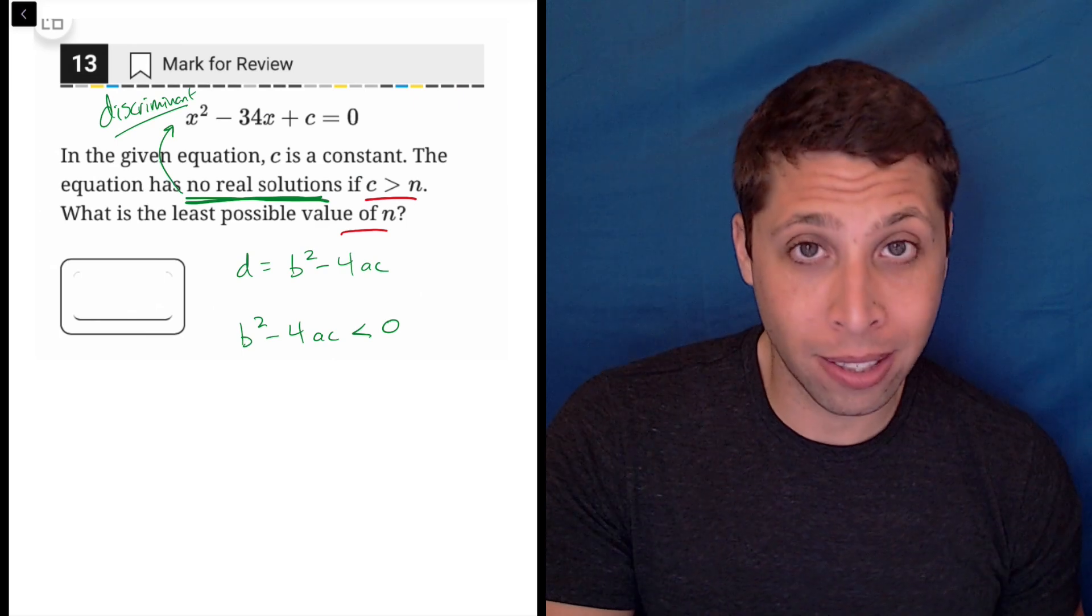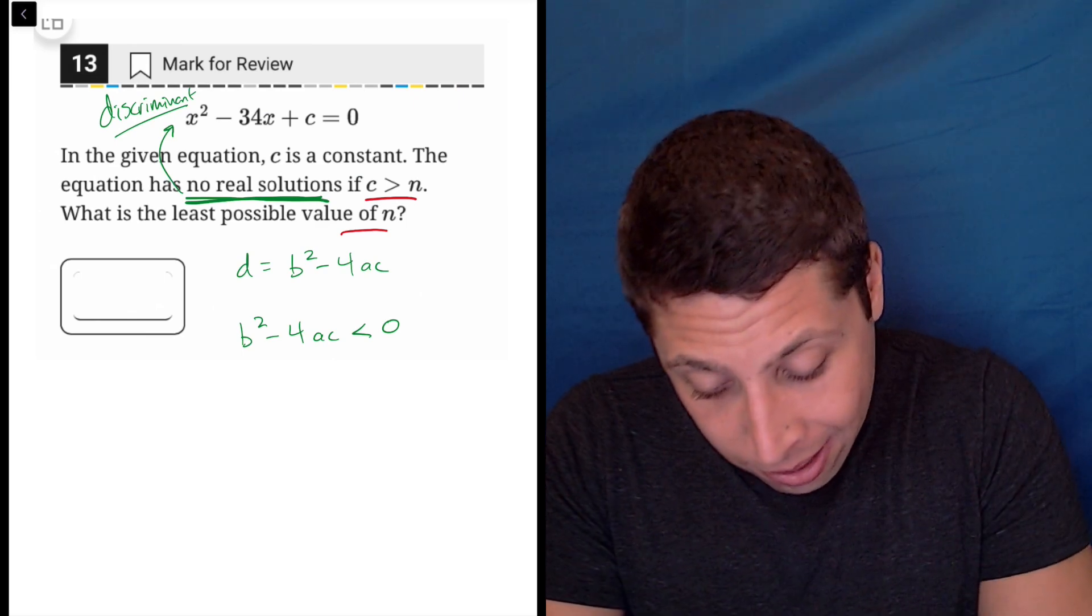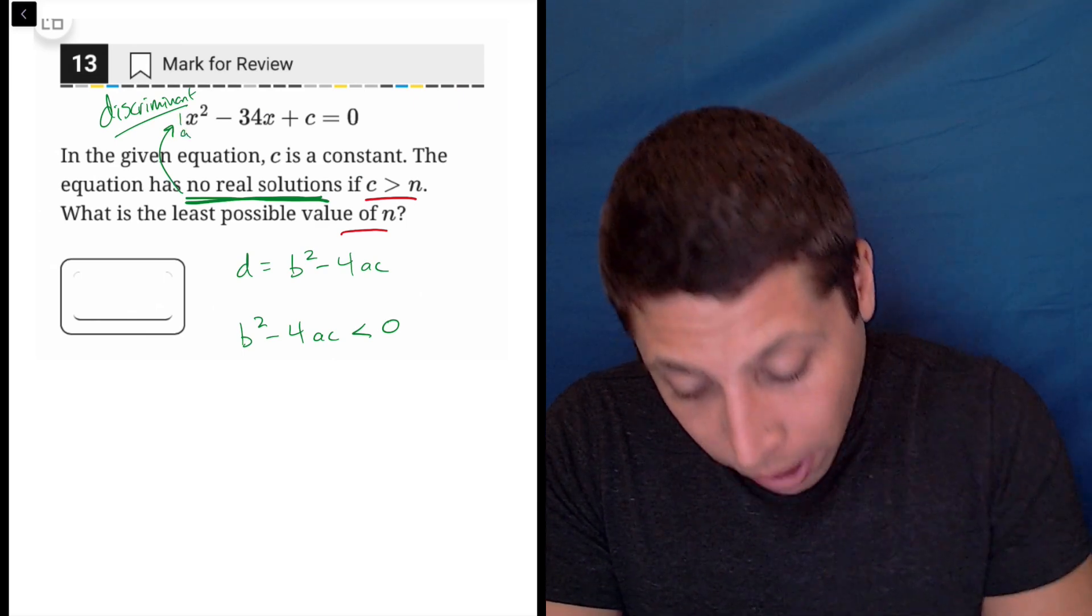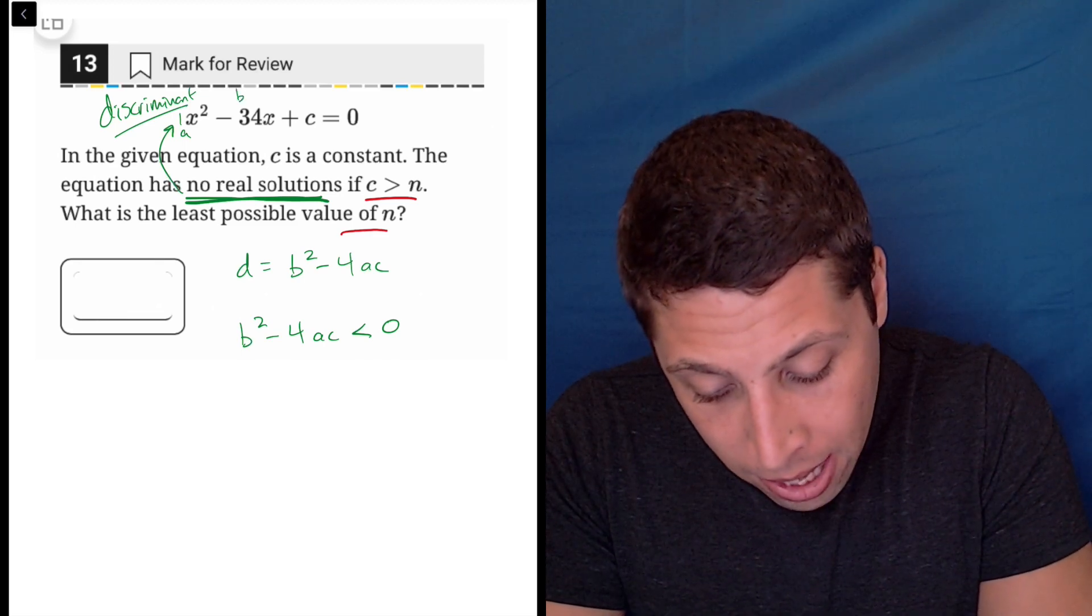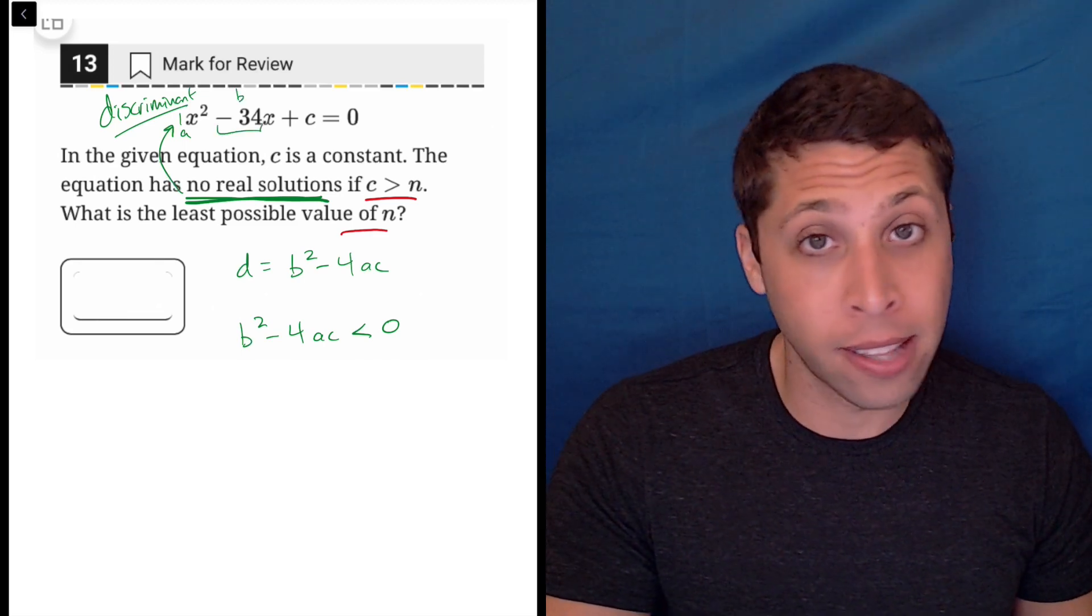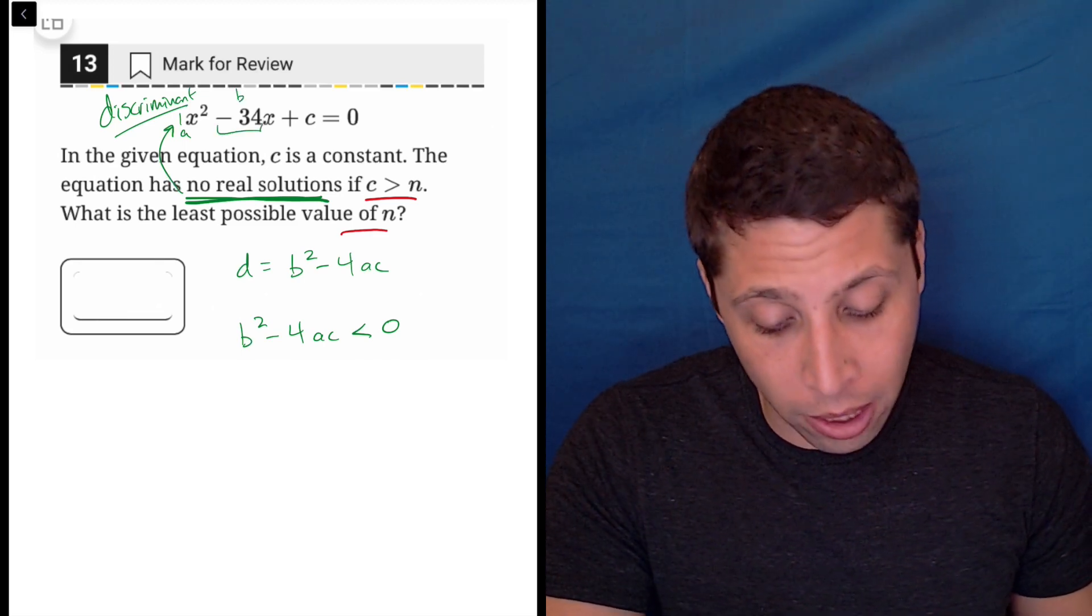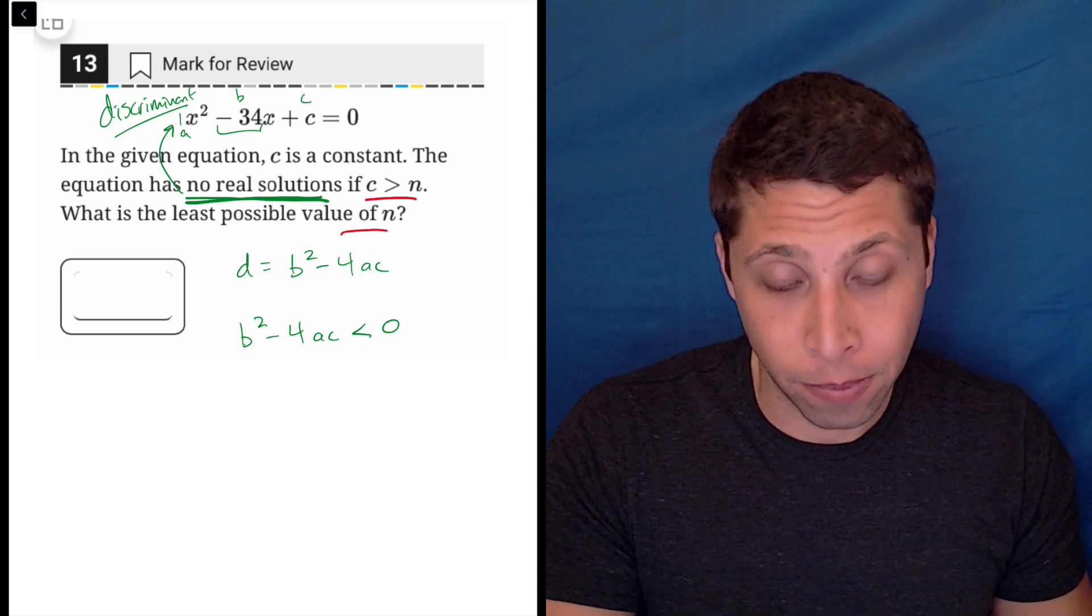And we have all the components except one. The a is going to be the number in front of the x squared, so that's one. The b is the number in front of the x, and that includes the sign in between, and then the c is just the c in this case.